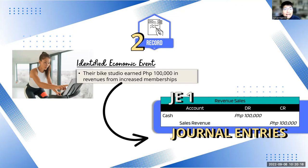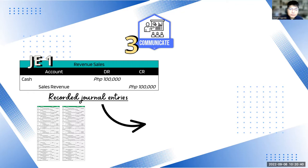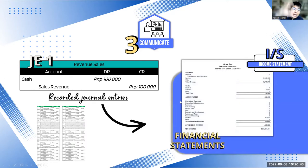The last step is communicating. You have an economic event, and every economic event has a corresponding journal entry. Let's say the bike studio has been running for months or years — there will be many economic events, and the more economic events, the more journal entries accumulate. The last step is that after you have so many journal entries, you compile, compute, and summarize them into financial statements, which are your reports used to communicate to users and analyze or interpret the data.